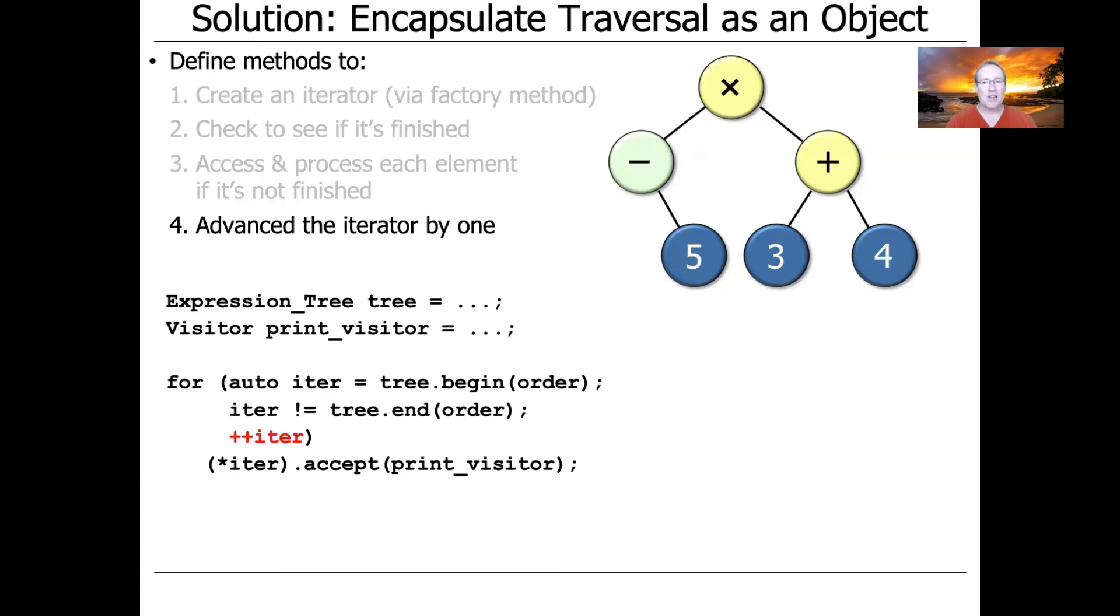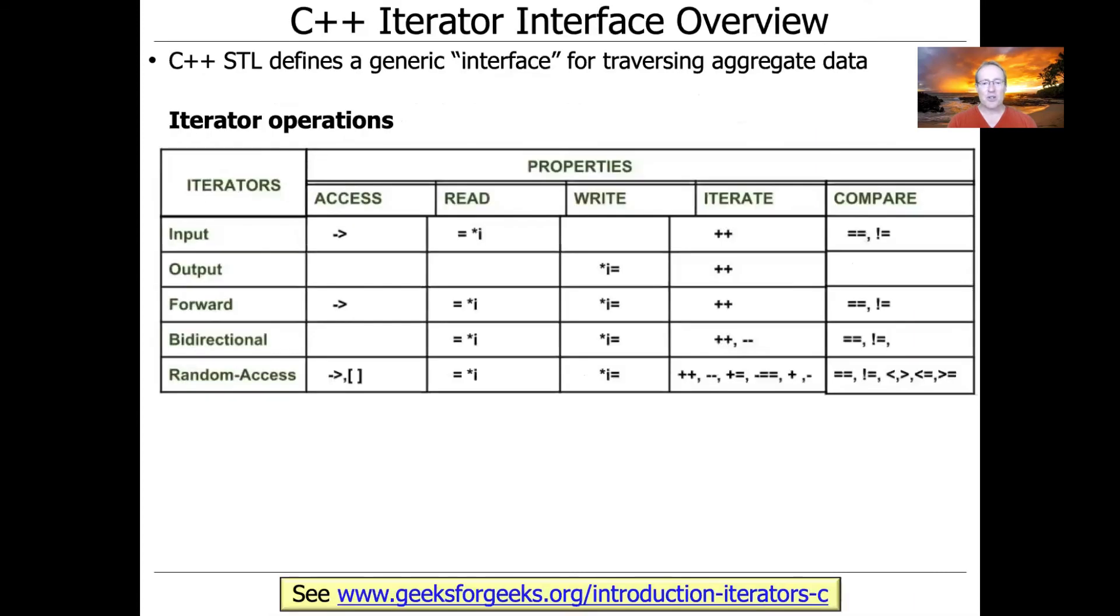And if you take a close look at this, you'll see that this is really trying to mimic the C-style pointer arithmetic model. So you get an iterator, you check while you're not at the end, you do something with the iterator by dereferencing it, and then you go ahead and increment it by one, or decrement it by one, and so on and so forth. That's basically the way we're going to use this in the context of our expression tree.